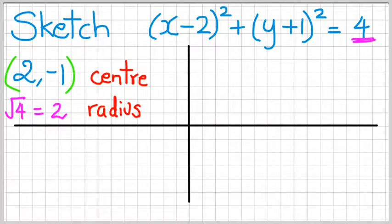So let's draw this. My center is at (2, -1), so that's where my center is, and it has a radius of 2. So my circle is going to look like that. So there's my circle done.